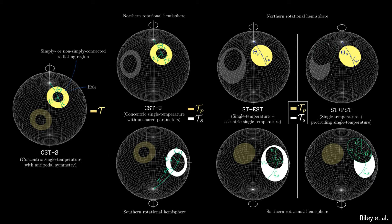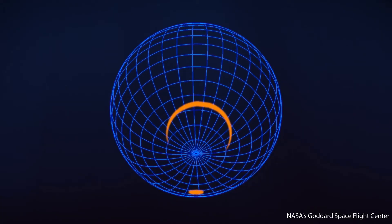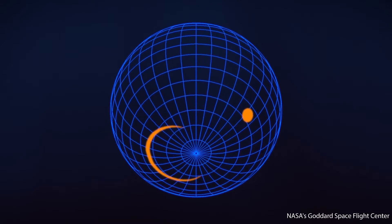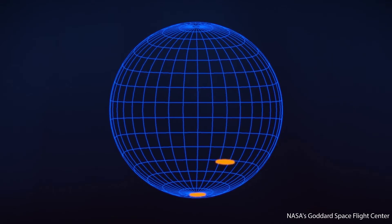However, both the STU and the higher complexity models require antipodal hotspots, but the evidence suggests that both hotspots are located on same rotational hemispheres, separated by approximately 90 degrees.